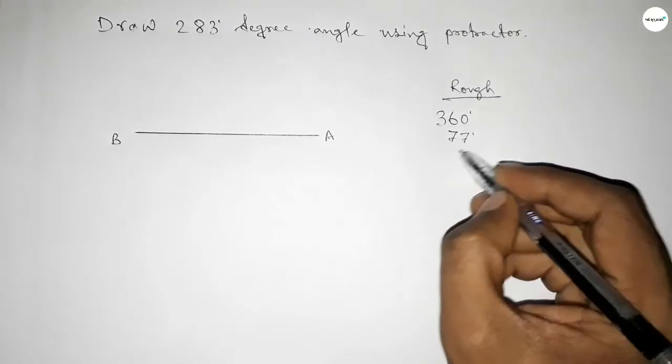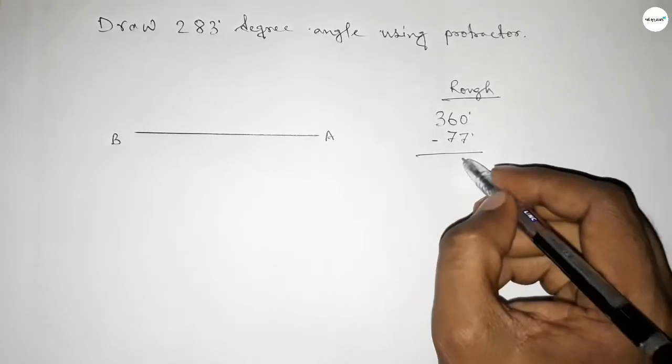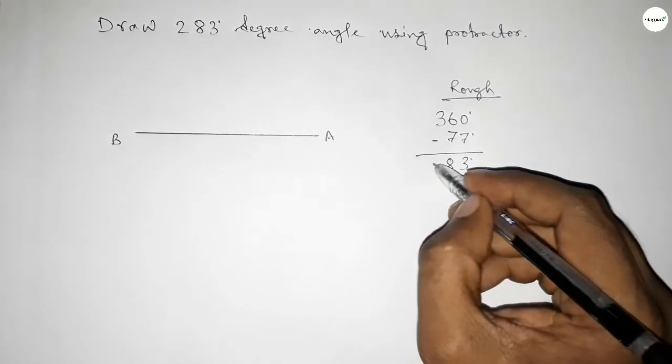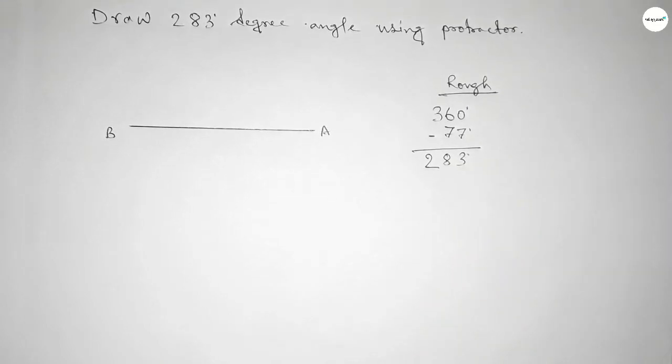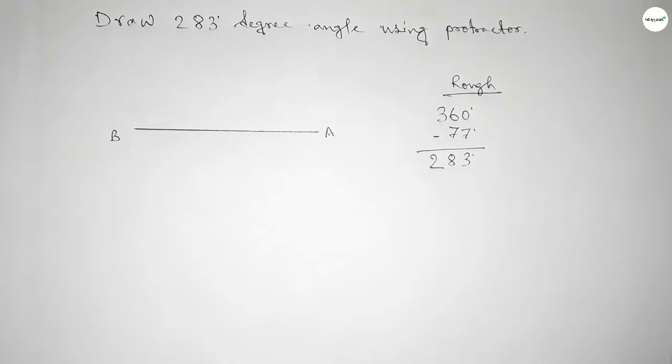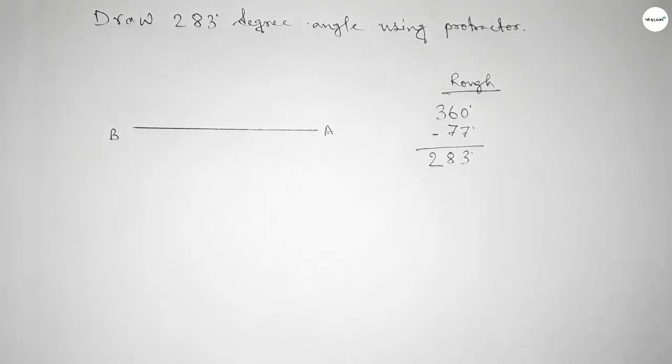So subtracting 77 degrees from 360 gives us 283. First, we have to count 360-degree angle on point B. So first putting the protractor on point B.